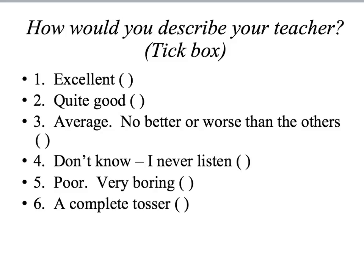For example, say you're doing a questionnaire on teaching and you're asked 'how would you describe your teacher?' with options like excellent, quite good, average, don't know, poor, or very boring. Two students could tick the same box — both saying their teacher is excellent — but mean completely different things. One student might mean their teacher is very strict, sets lots of homework, and pushes them to achieve at a high level. Another might mean their teacher is very laid back, doesn't set much work, and it's really easy. So people tick the same box and form part of the same percentage figure, but they might mean completely different things.